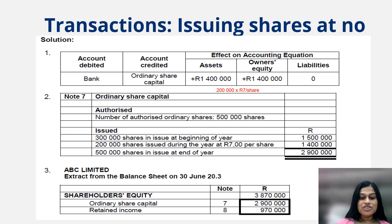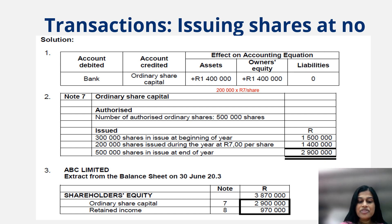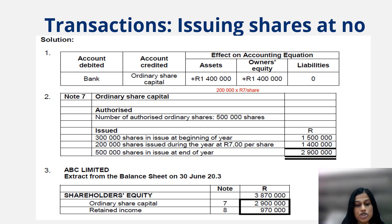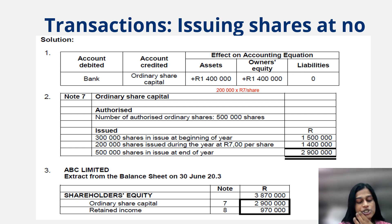At the beginning of the year, we had 300,000 shares in issue for 1.5 million. During the year, 200,000 shares were issued at 7 rand per share, amounting to 1.4 million. When we add the opening balance to the movement for the year, 500,000 shares are issued at year end with a total rand value of 2.9 million. As you can see, the issued amount equals the authorized amount, so this company can no longer issue any more shares.